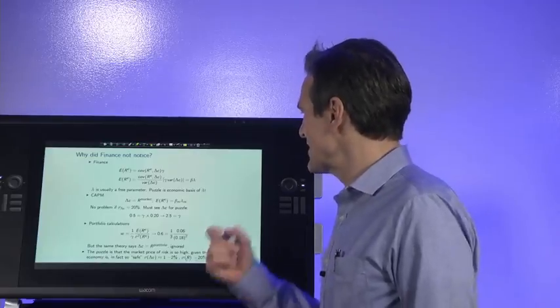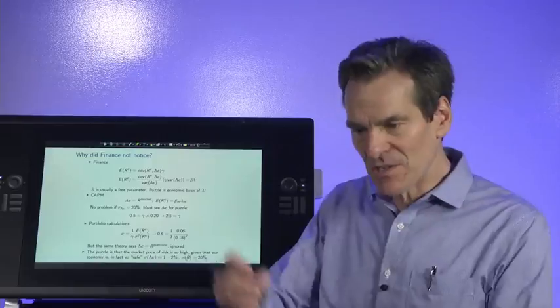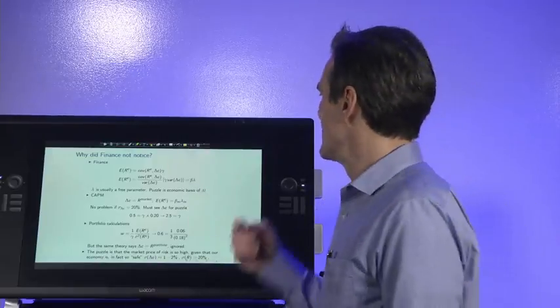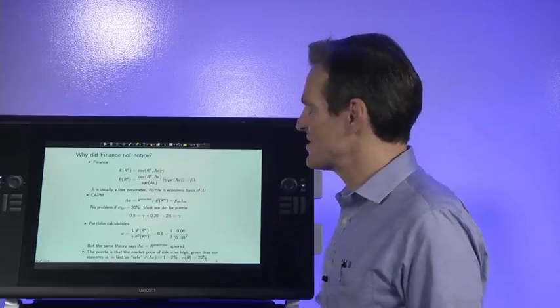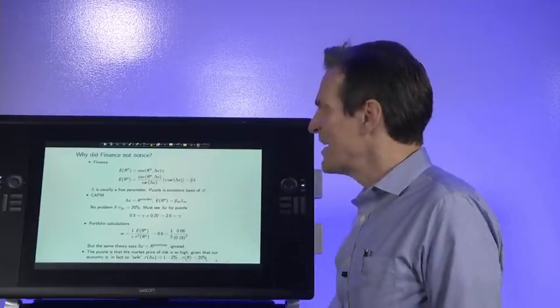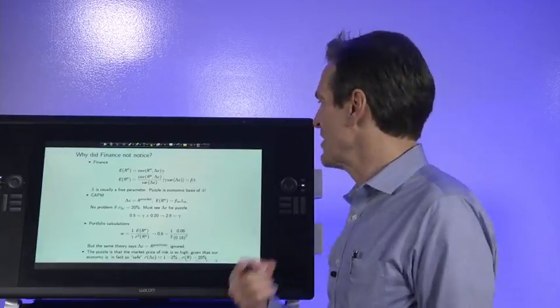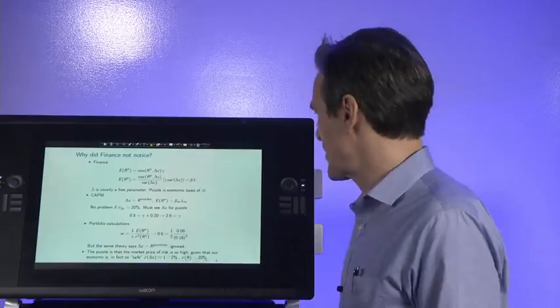Well, the equity premium puzzle is precisely about the economics of lambda. Expected returns can line up with betas just fine. The equity premium puzzle points out that lambda, gamma, variance of consumption growth—lambda is too big relative to the variance of consumption growth. And you have to look at consumption growth to notice that. You can't see that puzzle if you just look at asset prices.